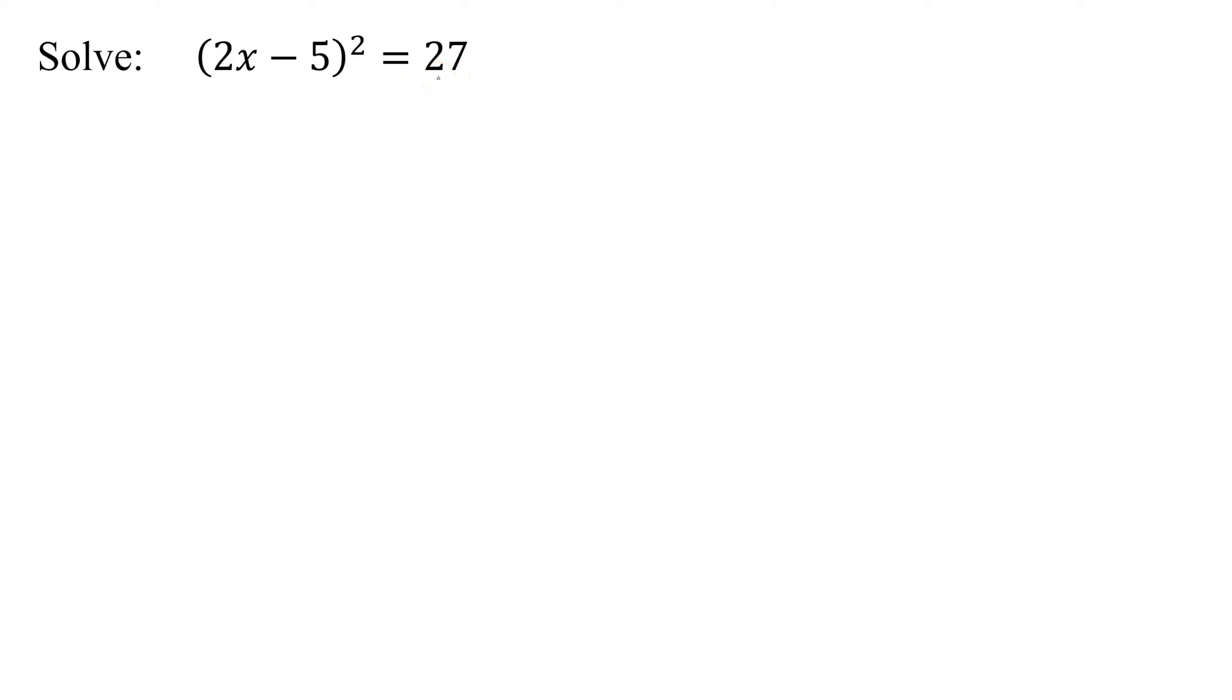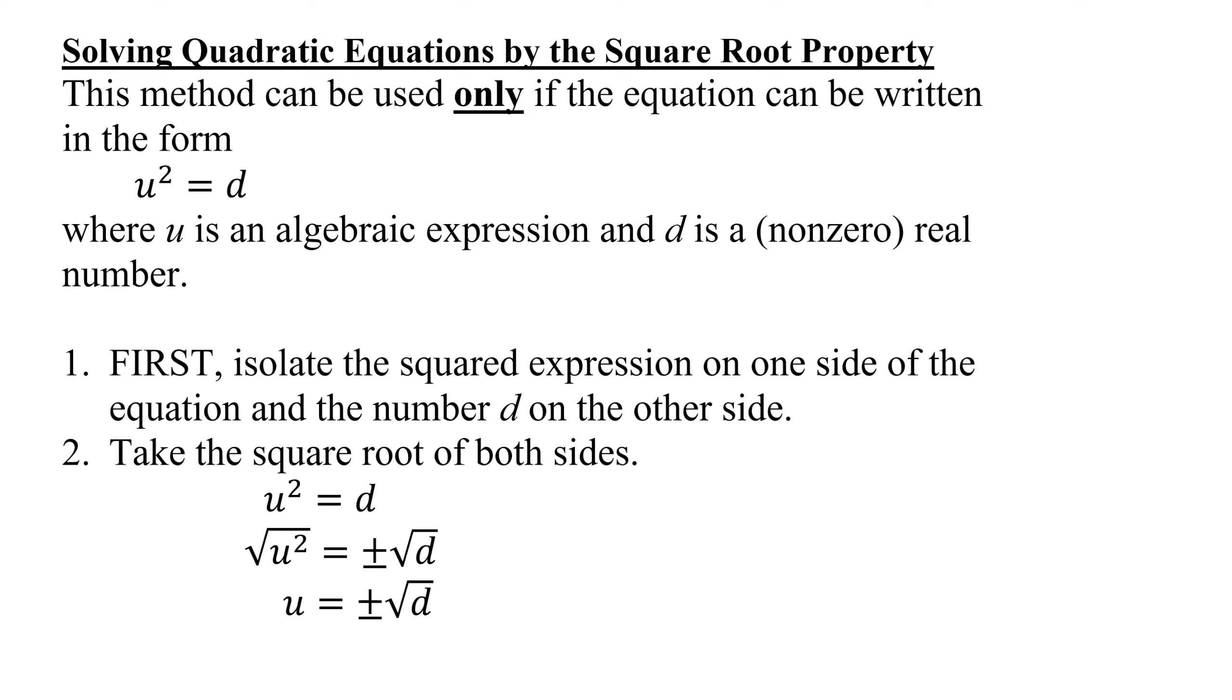When you have something squared equals a number, you can solve it by the square root property. This method is only used if the equation can be written in the form u² = d, where u is an algebraic expression and d is a non-zero real number.